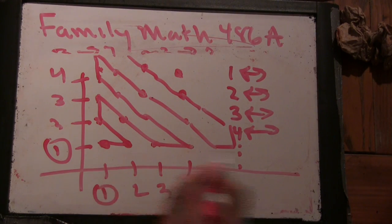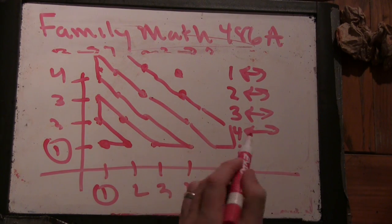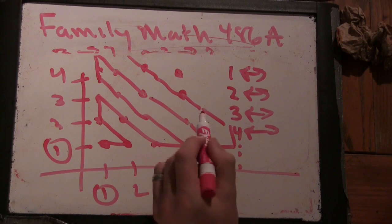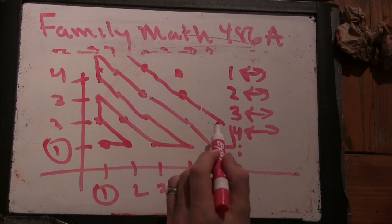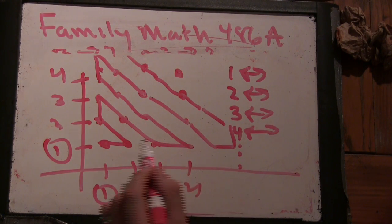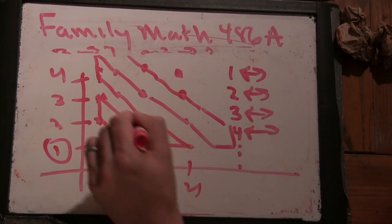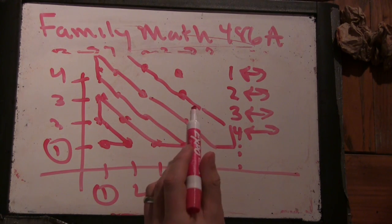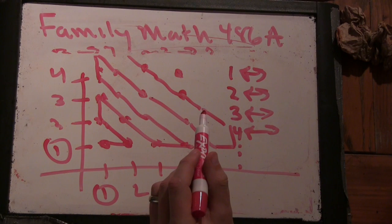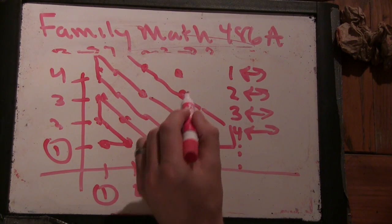Do I hit all the points in the grid? Yes. Do I ever hit a point twice? Nope. Are there any blanks? No. And if I asked you where the thousandth number was, you could just follow the grid and count to it. What about a million? Yes. What about ten million? Well, eventually yes.